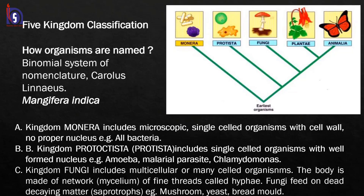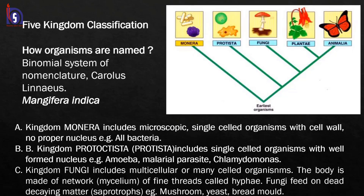Several biologists have classified living organisms using various methods. Initially, there was the artificial two-kingdom classification done by Aristotle. After that, Bentham and Hooker proposed the natural system of classification. Now we are dealing with the phylogenetic system of classification, under which we represent five kingdoms.